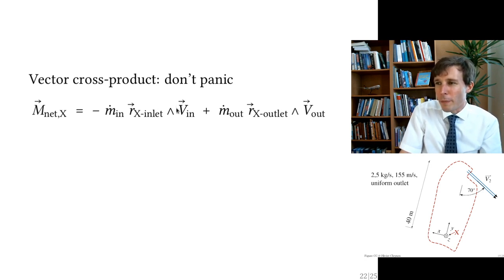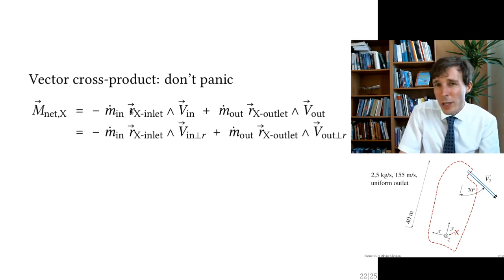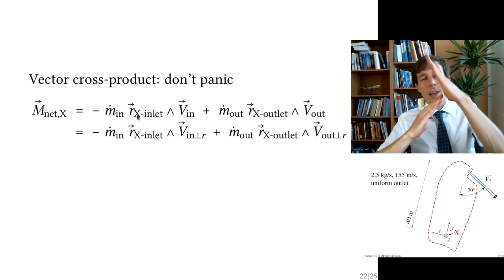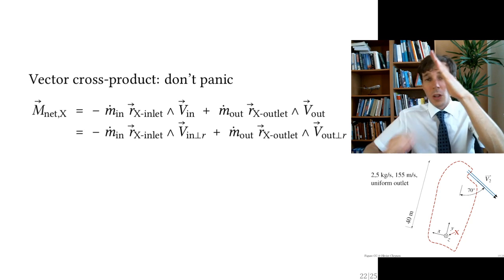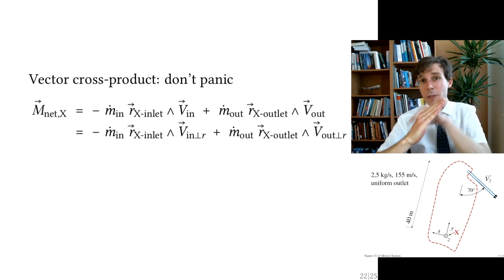We take the component of v_n that is perpendicular to the radius vector r. We identify the position r and the direction of v_n, then project v_n onto the direction perpendicular to r — squishing v_n down to its perpendicular component.